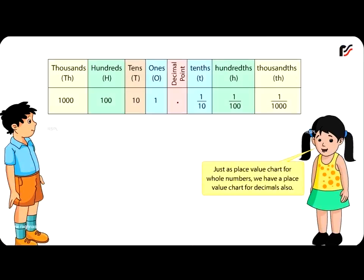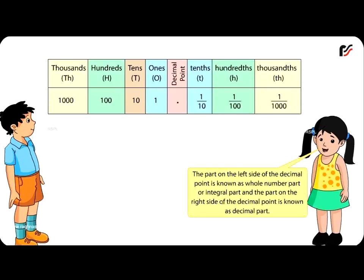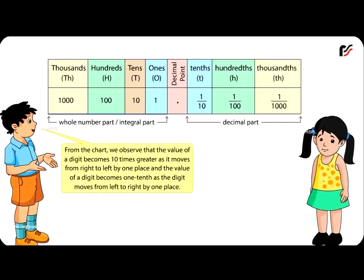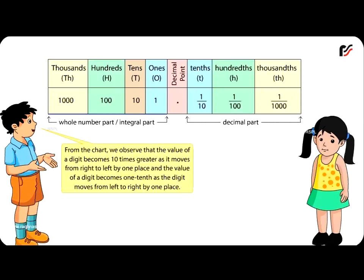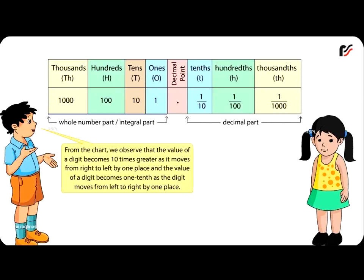Just as there is a place value chart for whole numbers, we have a place value chart for decimals also. The part on the left side of the decimal point is known as the whole number part or integral part, and the part on the right side is known as the decimal part. The value of a digit becomes 10 times greater as it moves from right to left by one place, and becomes one-tenth as it moves from left to right by one place.